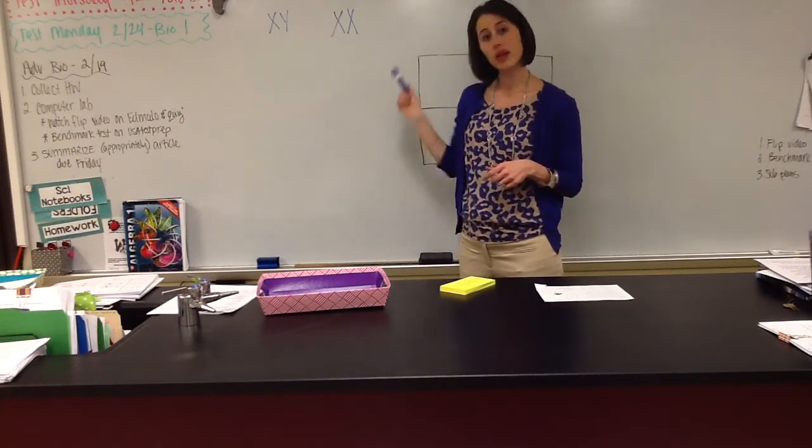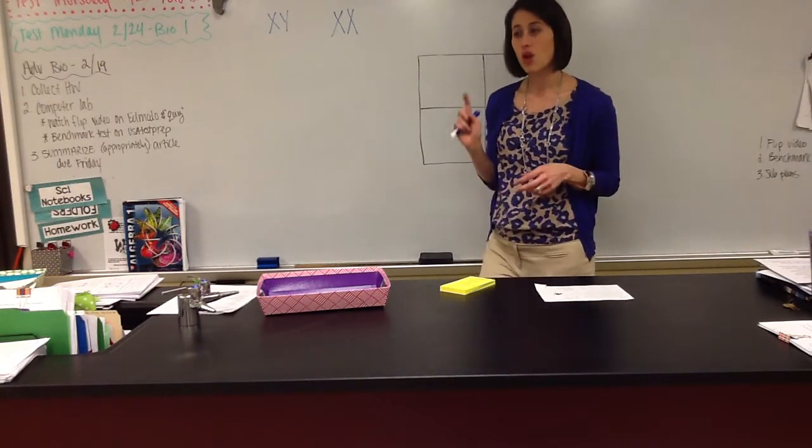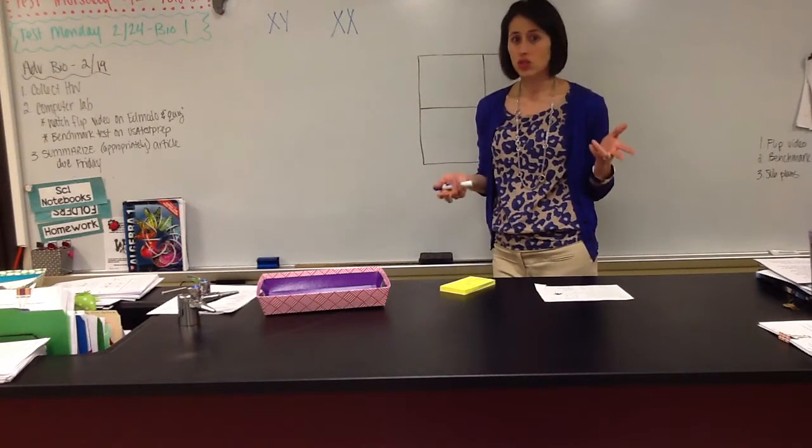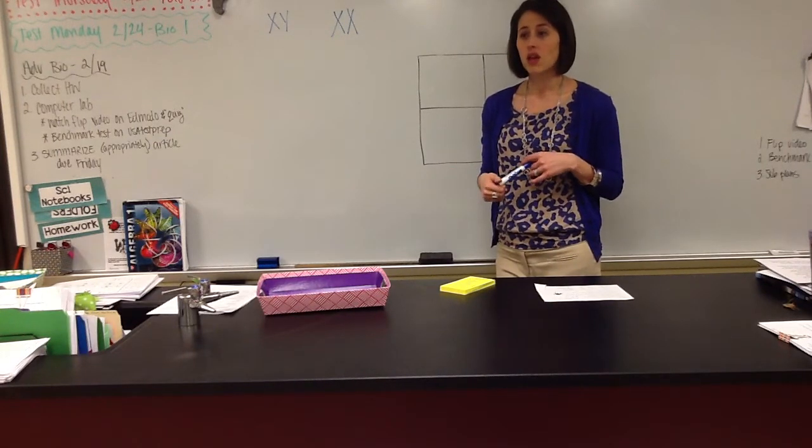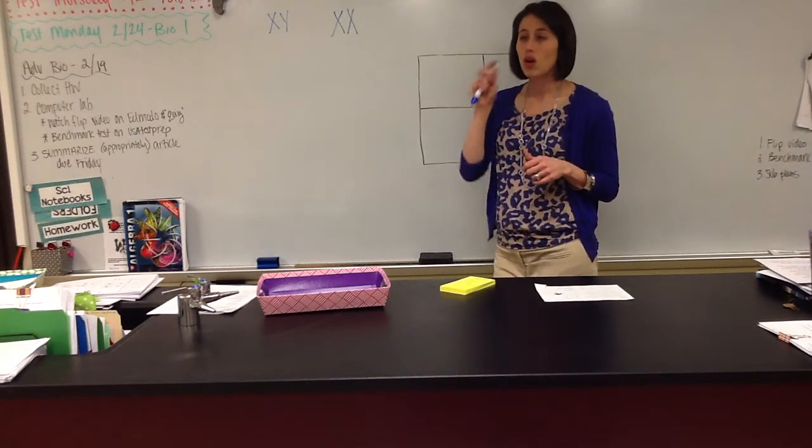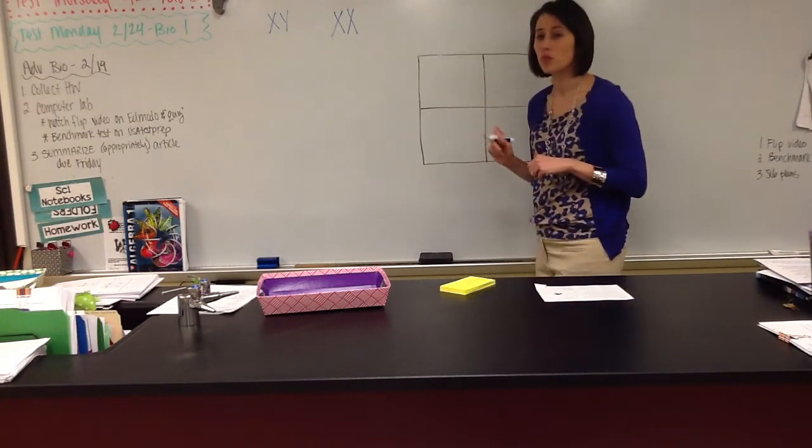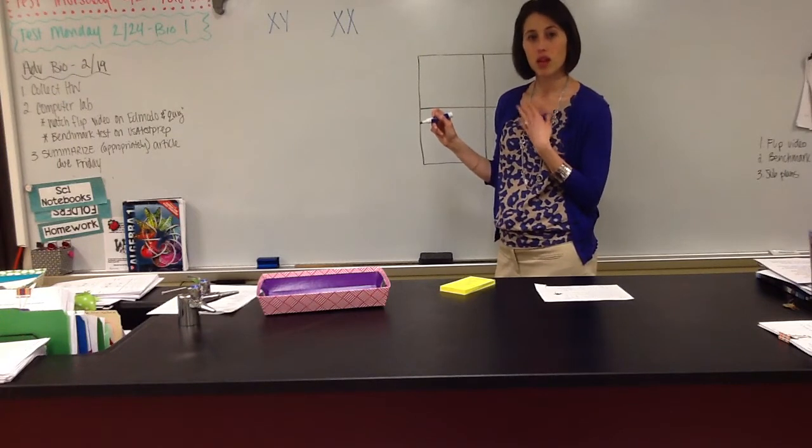So I'm going to do a couple of Punnett squares with you, and I'm going to use colorblindness for a couple different reasons. One, that is one of the well-known sex-linked traits. A lot of people actually inherit colorblindness, and my husband is colorblind. So I'm going to do a couple of Punnett squares, and we're going to figure out the probability of my kids being colorblind.